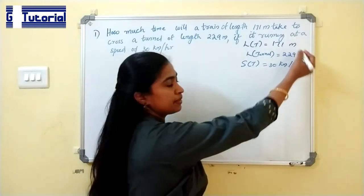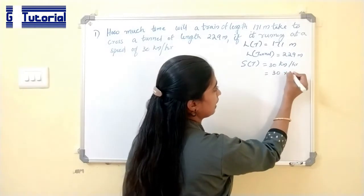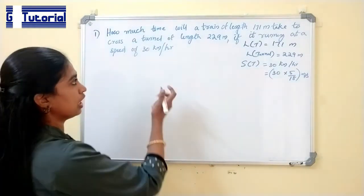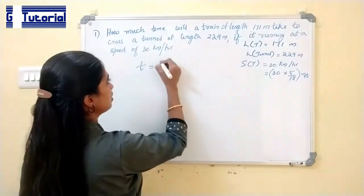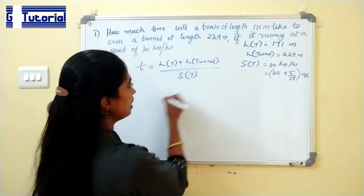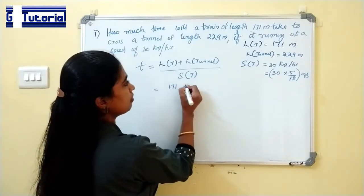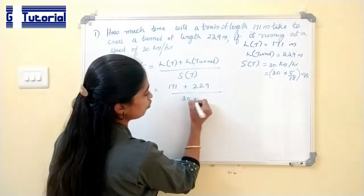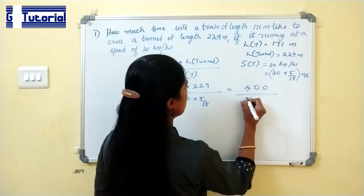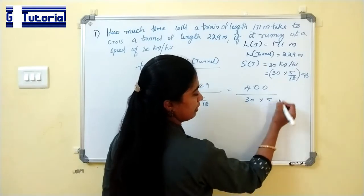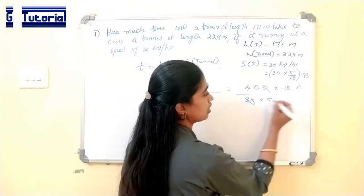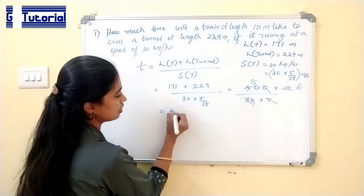30 km per hour converted to meters per second is 30 × 5/18 meters per second. Time taken to cross the tunnel equals length of the train plus length of the tunnel divided by speed of the train. That is 171 plus 229 divided by 30 × 5/18. This is equal to 48 seconds.